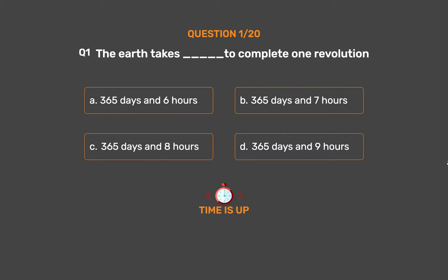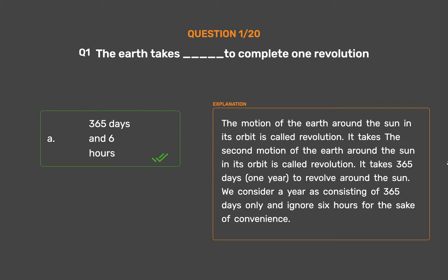The correct answer is Option A: 365 days and 6 hours. The motion of the Earth around the sun in its orbit is called revolution. It takes 365 days, one year, to revolve around the sun. We consider a year as consisting of 365 days only and ignore 6 hours for the sake of convenience.